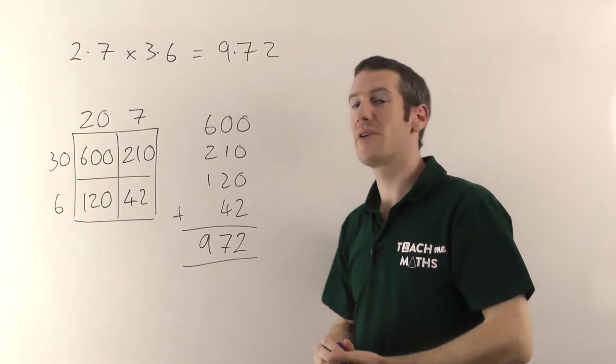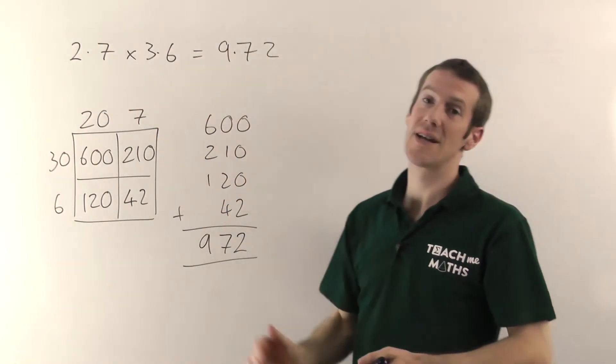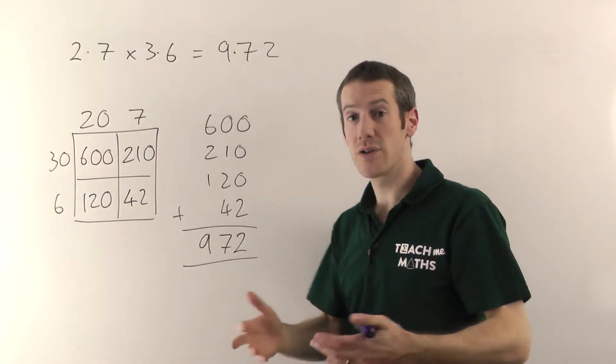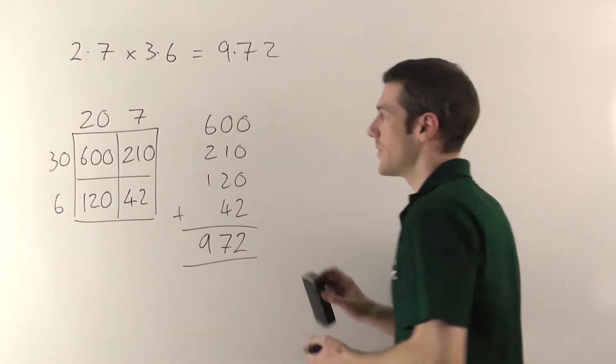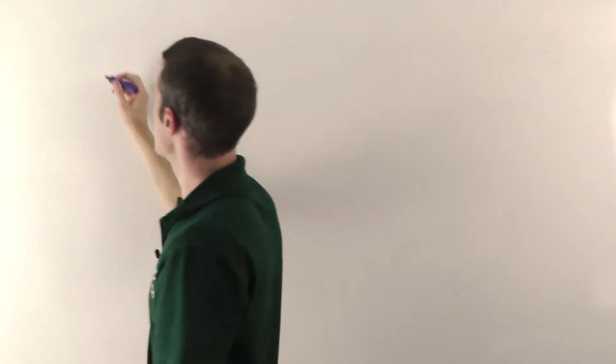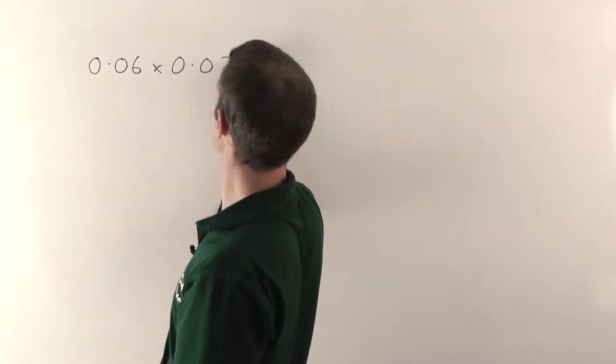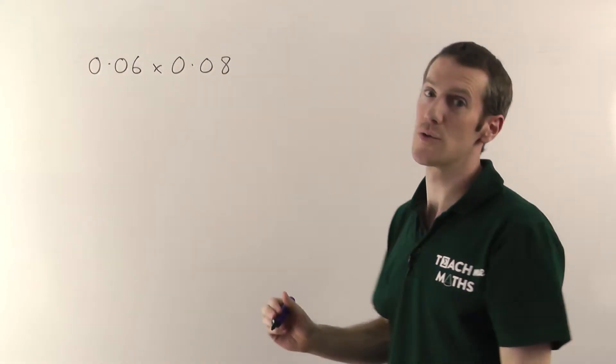The key thing you've got to remember here is however many decimal places there are in the question, that's how many decimal places there'll be in the answer. We'll just do one more to show you a slightly different one, but hopefully you get the idea. Alright, so it's going to be 0.06 times 0.08. Lot of zeros there.